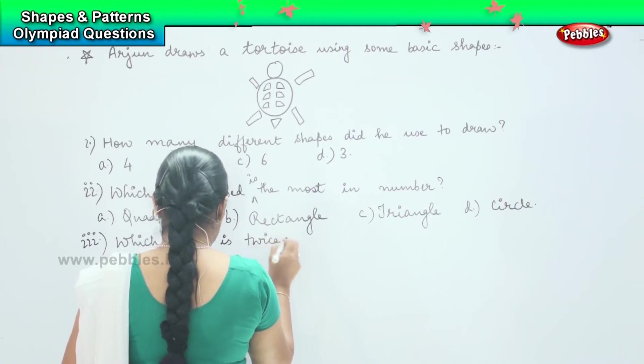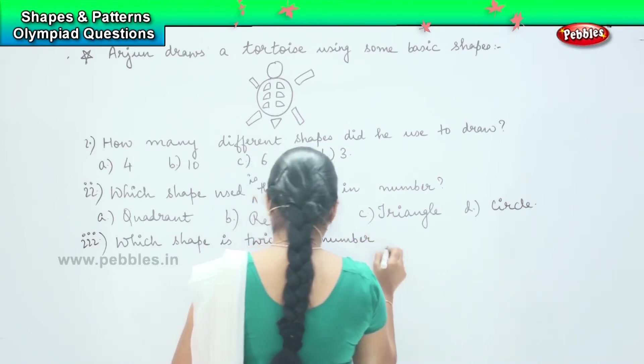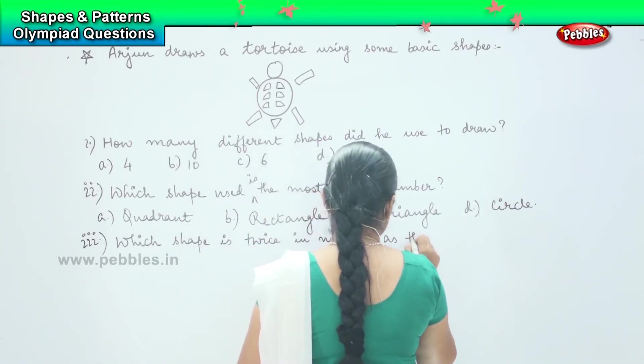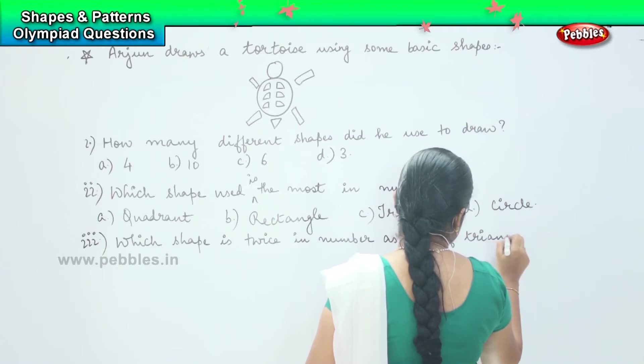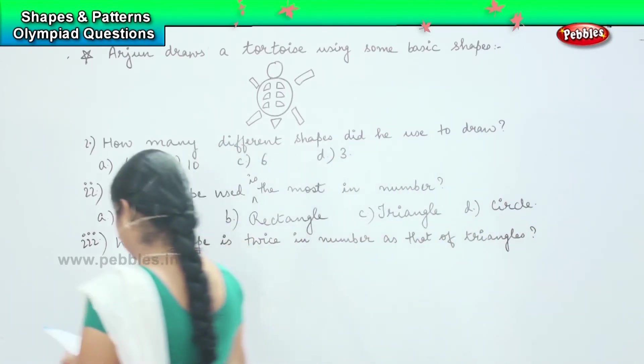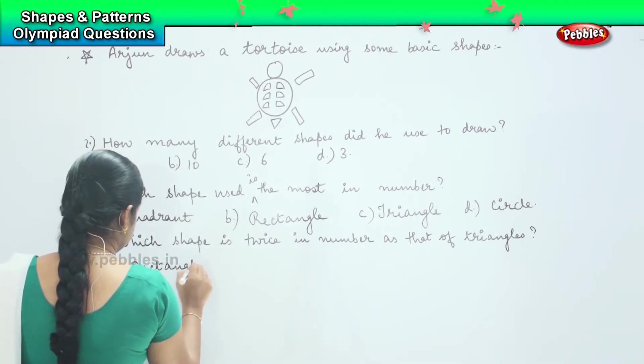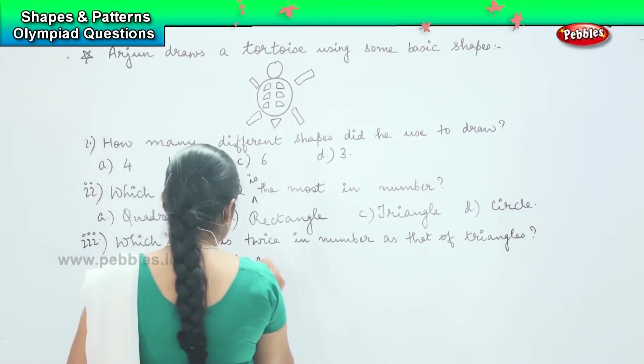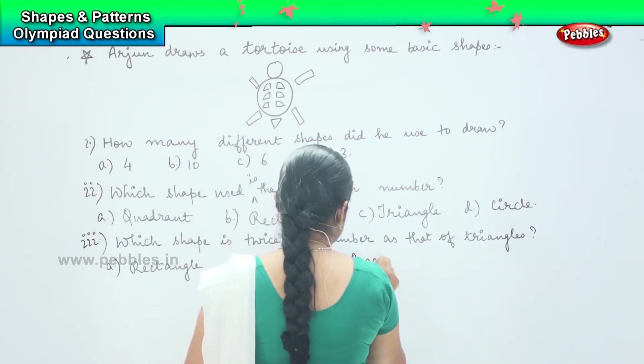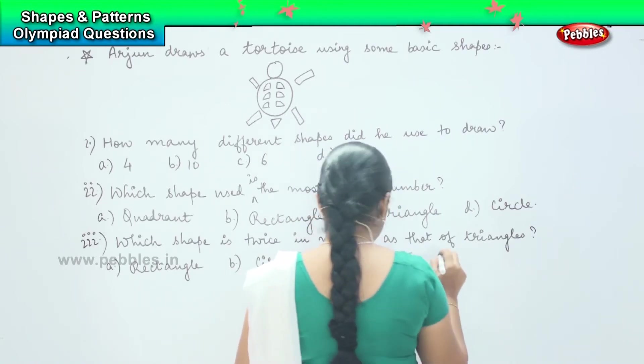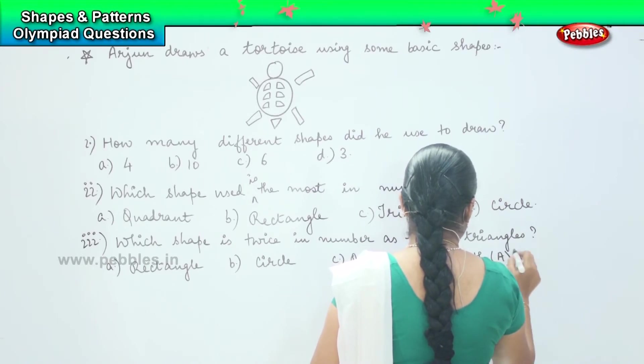Which shape is twice in number as that of triangles? Your options are A) rectangle, B) circle, C) quadrant, and D) both A and D.